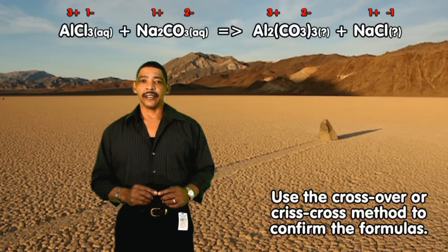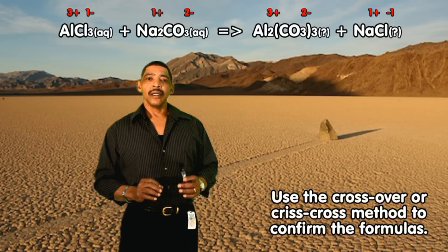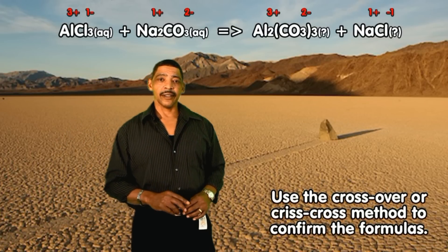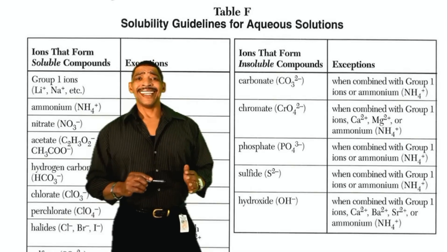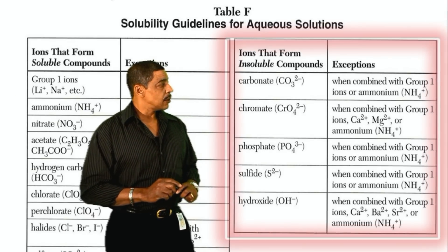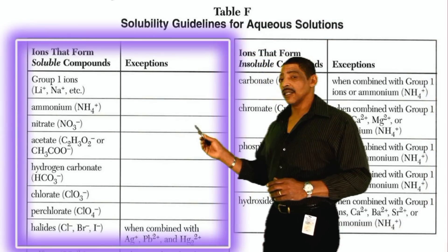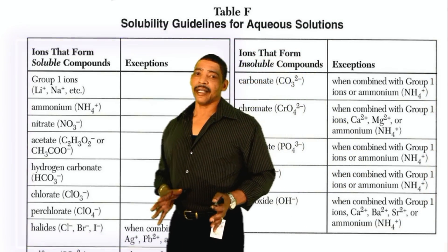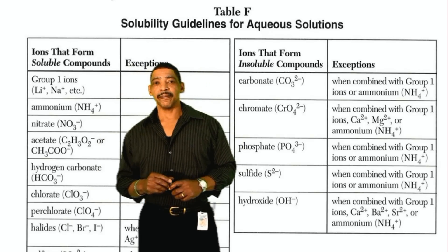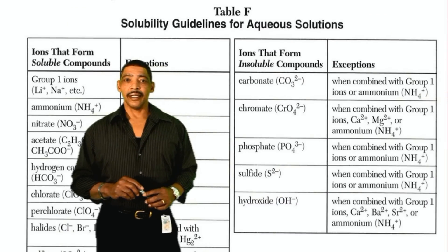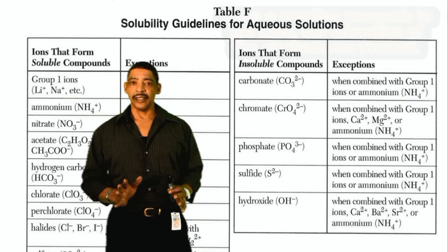If a double replacement reaction is indeed spontaneous, one of the products must be insoluble in water. To determine which product will be insoluble we should consult the solubility table, where combinations of species that lead to an insoluble compound are written on the right side and soluble combinations on the left side. Clearly most carbonate compounds are insoluble, except compounds containing group 1 ions or ammonium. In this case aluminum carbonate will definitely be an insoluble compound and the reaction will proceed to the right.